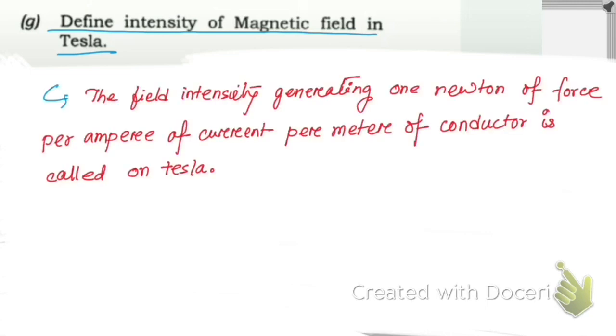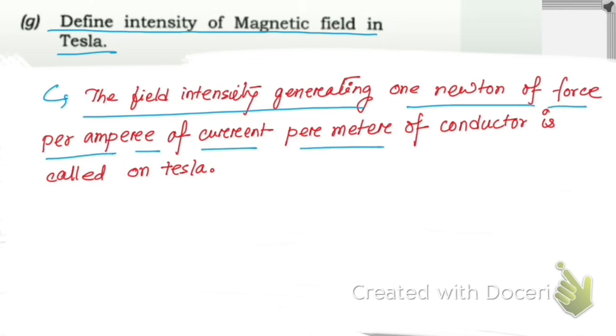Next question: define the intensity of magnetic field in tesla. The field intensity generating one newton of force per ampere of current per meter of conductor is called one tesla.